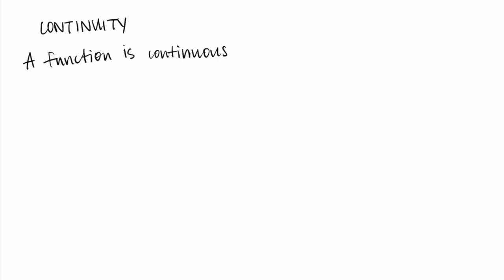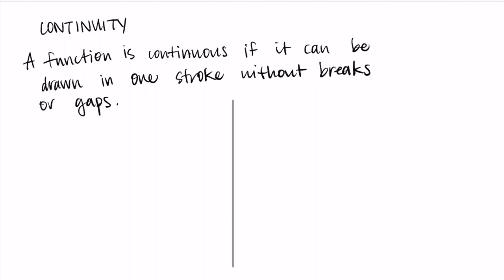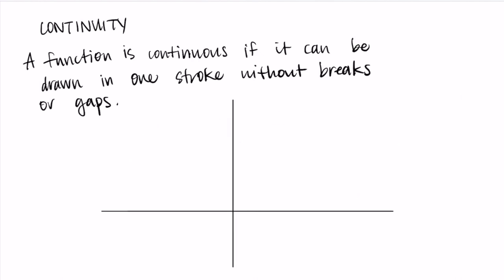I like to just think of a function being continuous if you can draw it with one stroke of the pen. This means we can draw it with no gaps or breaks in the function. So if we think about putting a function on some axes, we want to be able to start on the left hand side and finish on the right hand side without any breaks or gaps — this would be a continuous function.